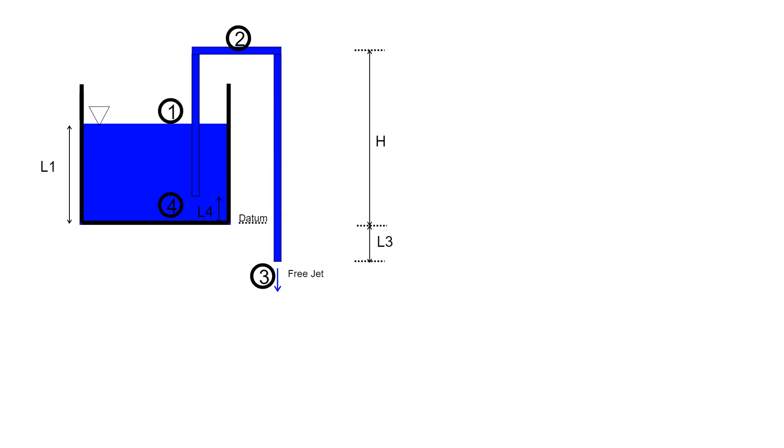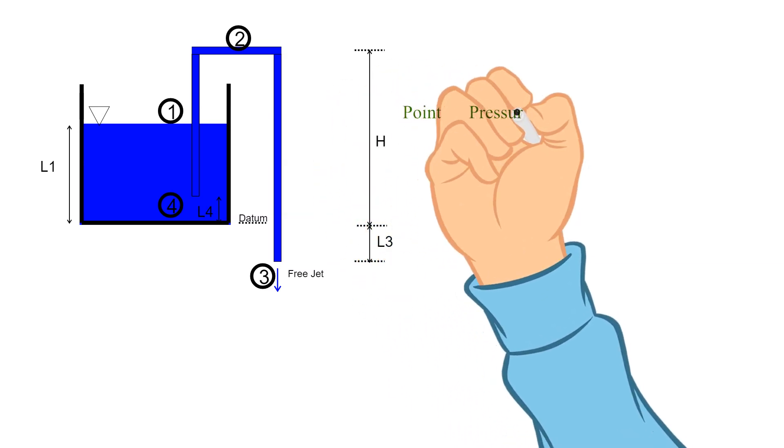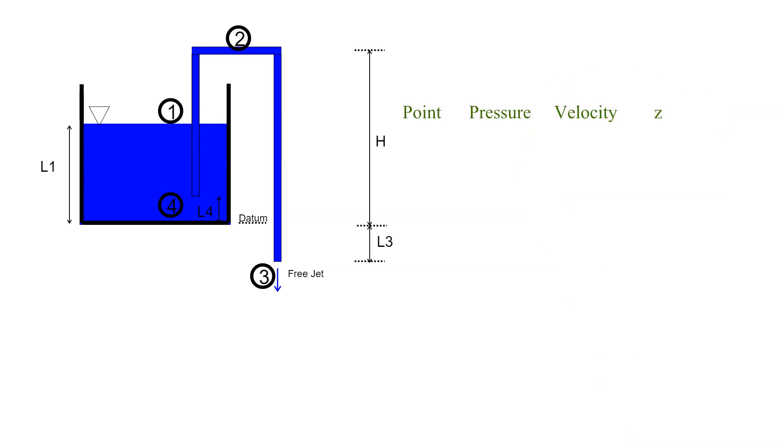Let's build a table of what we know from the given data and standard assumptions in the application of Bernoulli's equation. For each point we want to list the pressure, velocity, and the elevation from the datum. For point 1, its pressure is atmospheric since it is a free surface, its velocity is zero since it is a large tank, its elevation is given as L1. For point 2, its pressure is unknown, its velocity is unknown, its elevation is given as H, which is what we are trying to determine.